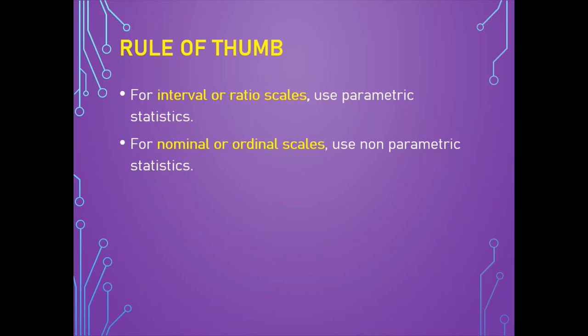The rule of thumb for using parametric vs. non-parametric statistics: for nominal scales or ordinal scales, always prefer non-parametric statistics. The nominal scale labels variables in different classifications without implying a quantitative value or order. The ordinal scale represents non-mathematical ideas such as frequency, satisfaction, or degree of pain. For interval scales or ratio scales, always use parametric statistics. The interval scale is a numerical scale where the order and differences between variables are known. The ratio scale additionally provides information about the true zero value.